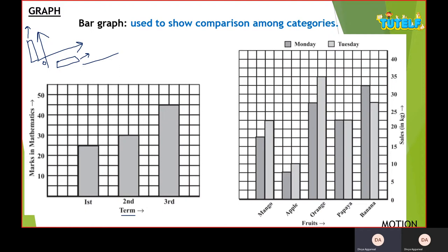Check this one - in different terms we have different marks for mathematics subjects. For the first term we have 25, for second we have 30, and for third we have 45. We read the maximum distance that this bar graph goes - it's till this value which is 25.